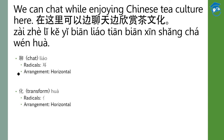The first one is 聊. 聊 means chat. It has a similar meaning as 谈, which you have learned before — to talk about something or chatting over things. The pinyin is 聊, and the radical is the component on the left. The arrangement is horizontal, because you have left and right components.